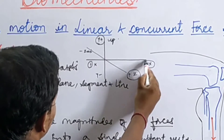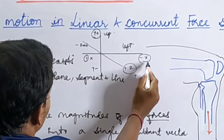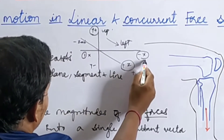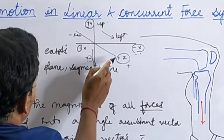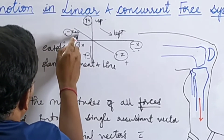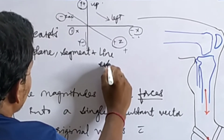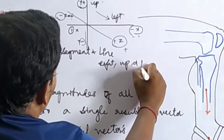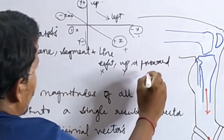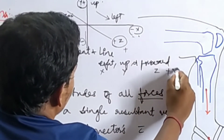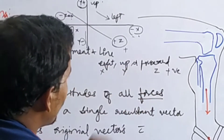Negative signs are assigned when the displacement of the force is to the left with respect to x-axis, downward with respect to y-axis, or backward with respect to z-axis. Simply put: right, up, and forward are positive, whereas left, down, and backward are assigned a negative sign.